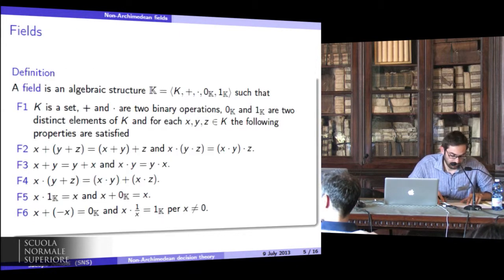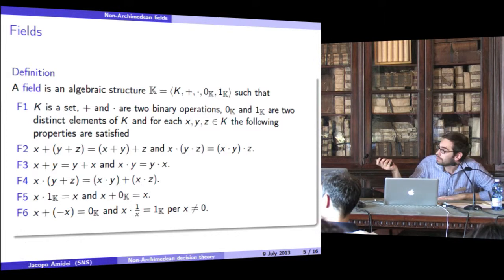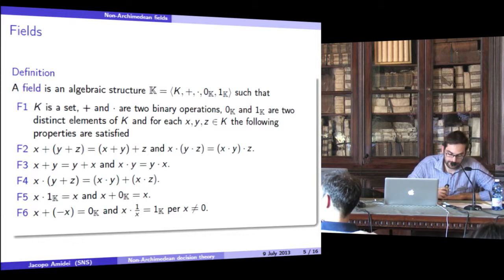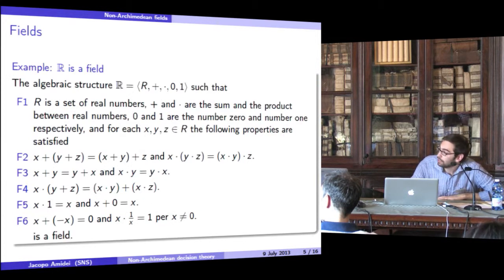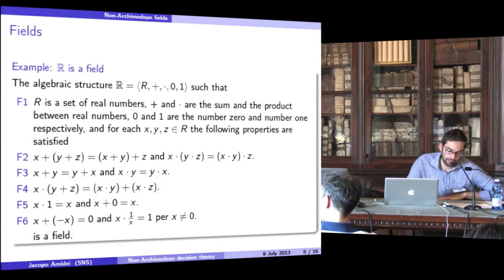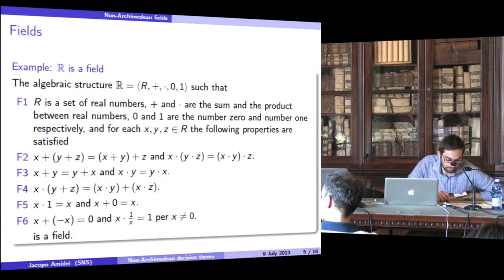Okay, a field is an algebraic structure that satisfies these six axioms. For example, a familiar field is that of the real numbers, where the two binary operators are the sum and the product between real numbers, and the two distinct elements are 0 and 1.